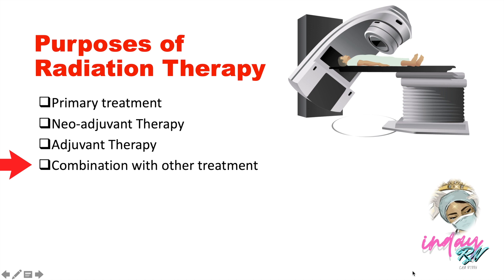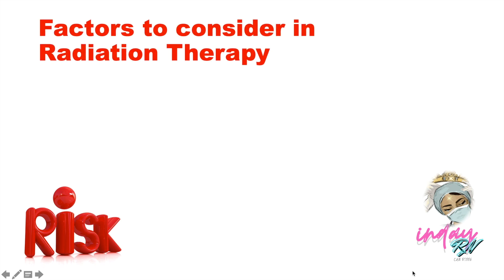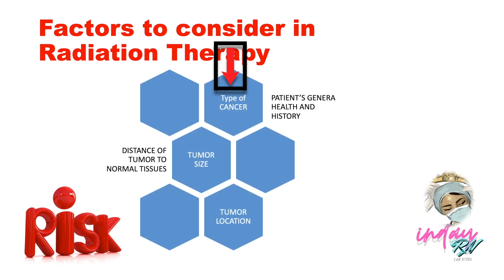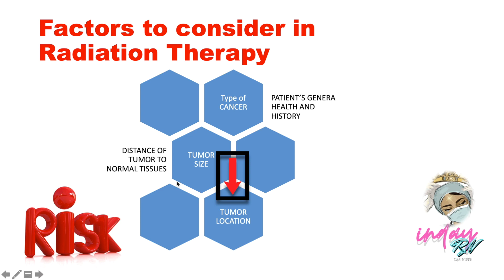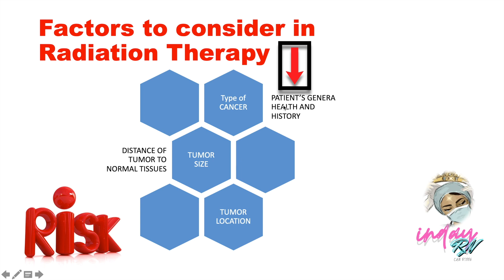Another purpose of radiation therapy is that it can be combined with other treatments like chemotherapy. When chemotherapy and radiation therapy are fused together, they can effectively destroy cancer cells. In advanced stages, radiation therapy can also alleviate symptoms caused by cancer. Factors to consider in radiation therapy include: the type of cancer, the tumor size, the tumor location, how close the tumor is to normal tissues sensitive to radiation, and the patient's medical history.